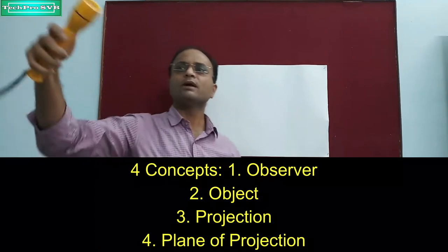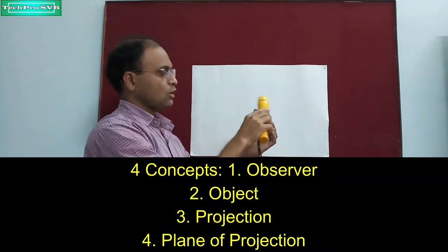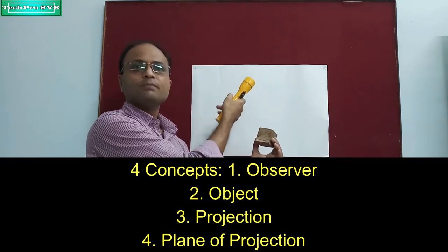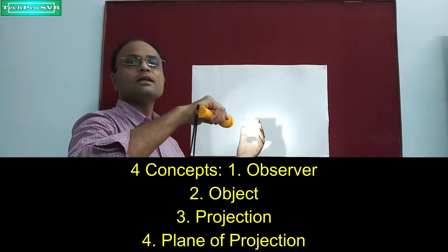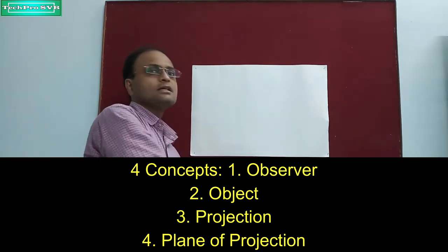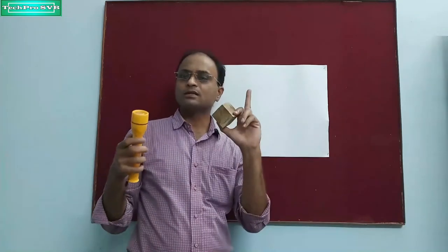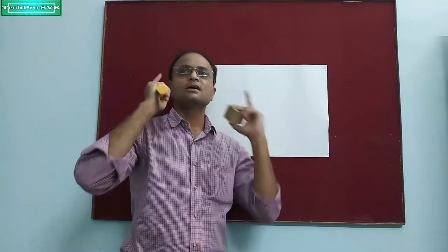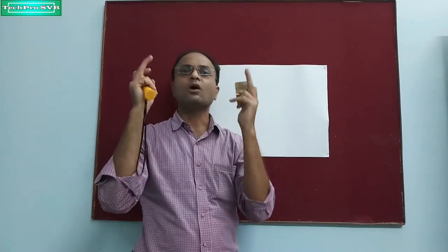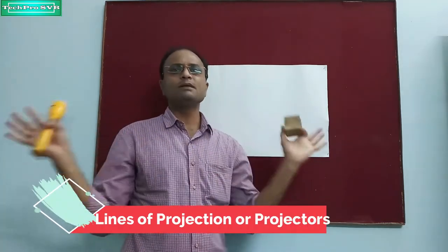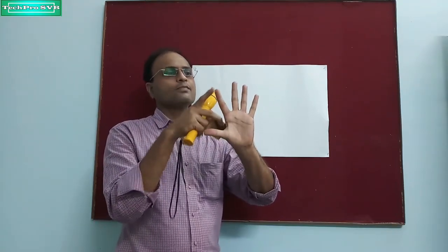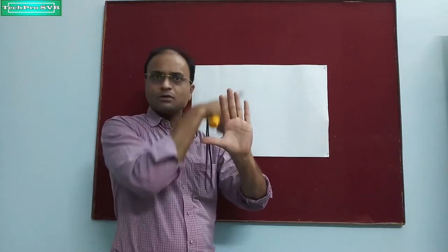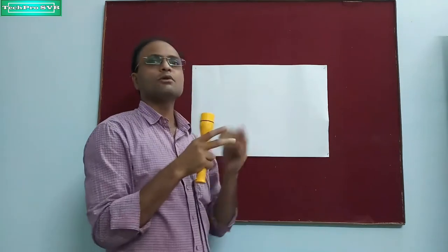So we have understood five concepts. One is the observer, which is at infinite distance. Second is the object for which we have to get its projection onto the plane. Third is the projection, that is the image or shadow obtained on the plane. Fourth is the plane of projection. And fifth — when the observer is at infinite distance, all the rays coming are parallel to each other; these are called lines of projection or simply projectors.